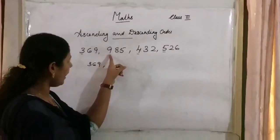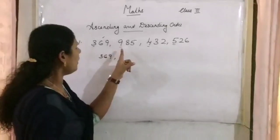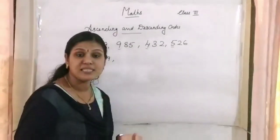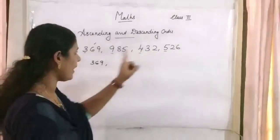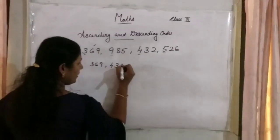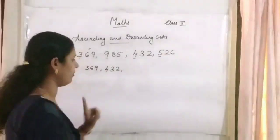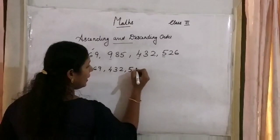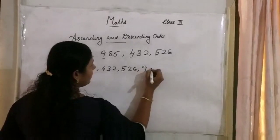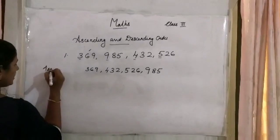Next, from the remaining hundreds digits 9, 4, and 5, which is the smallest? 4. So we write 432 in the second place. Then from 9 and 5, which is smaller? 5. So 526 goes in the third place. And the last place is 985. So the ascending order is: 369, 432, 526, 985.